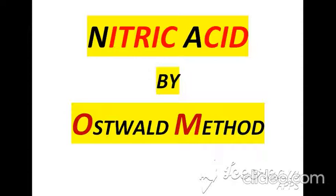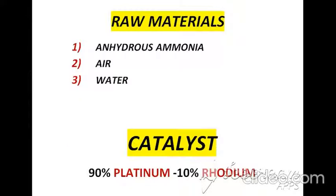Today I am presenting a lecture on the nitric acid industrial manufacturing process. To manufacture nitric acid, a special method called the Ostwald method is used. I will explain the nitric acid industry with the help of raw materials, chemical reactions, manufacturing steps, and a process flow diagram.